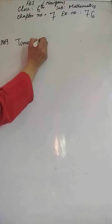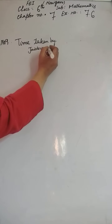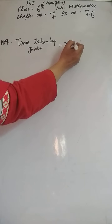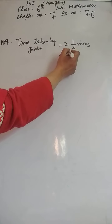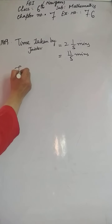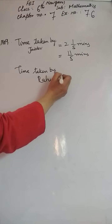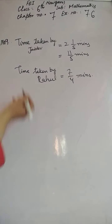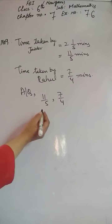Time taken by Jaidev to cross the school ground: 2 1/5 minutes. Yeh mixed number hai, toh isko improper banayenge: 5×2=10, 10+1=11, so 11/5 minutes. Time taken by Rahul: 7/4 minutes. Who takes less time? According to the question, comparing 11/5 and 7/4 by cross multiplication.